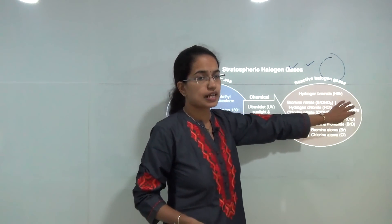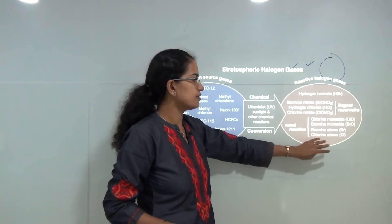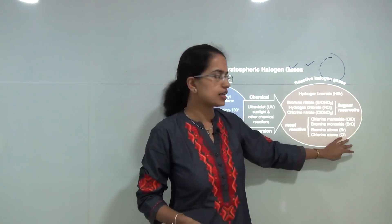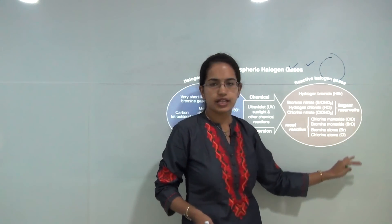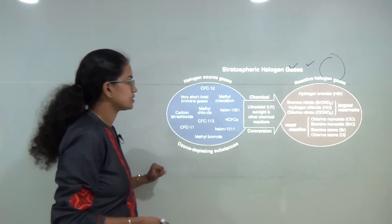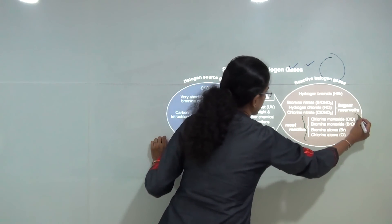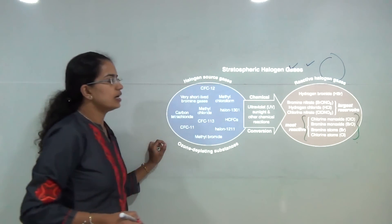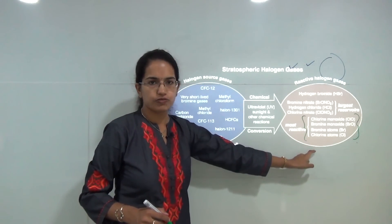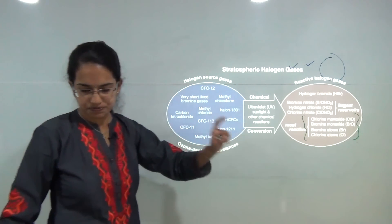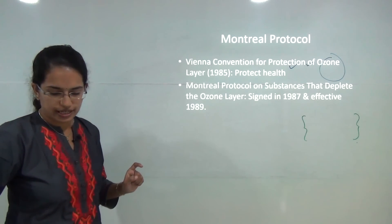The most reactive ones are the free radicals of chlorine, free radicals of bromine, chlorine monoxide, and bromine monoxide. These were identified as the most reactive gases leading to the highest destruction of the ozone layer. As a result, the Montreal Protocol came into force.